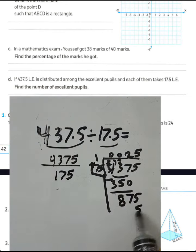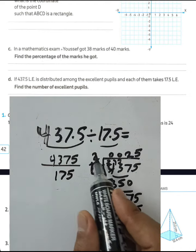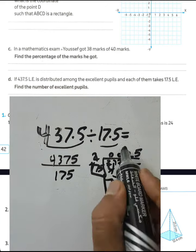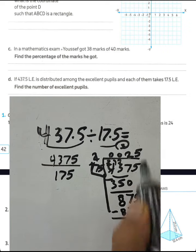5 times 5 equals 25, 5 and carry 2. 5 times 7 is 35, 35 plus 2 equals 37, 7 and carry 3. 1 times 5 equals 5 plus 3 equals 8.